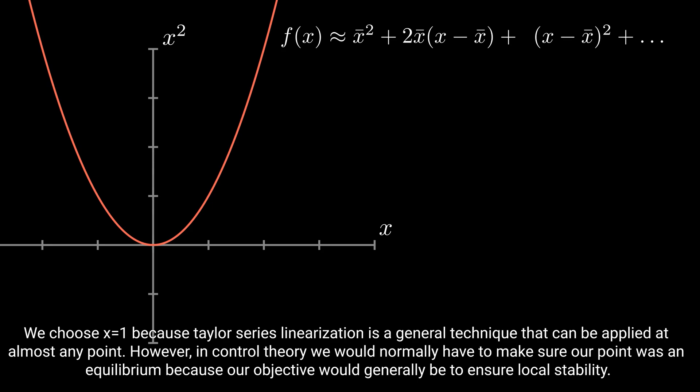So if we choose x̄ to be equal to 1, then our first term would be x̄ squared, so 1 squared is just 1, and if we plot that out we see we just get a horizontal line.